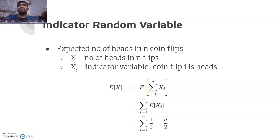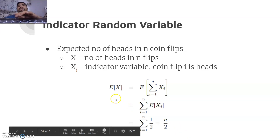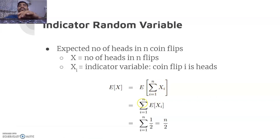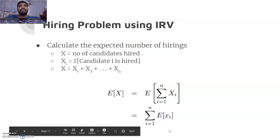Let's apply indicator random variables to the coin toss example for multiple trials. What is the expected number of heads in n coin flips? Let X be the number of heads in n flips, and let X_i be the indicator variable for the i-th flip getting heads. Then E[X] = E[Σ X_i] = Σ E[X_i] = Σ P(heads) = Σ (1/2) = n/2.